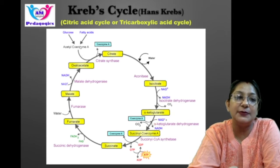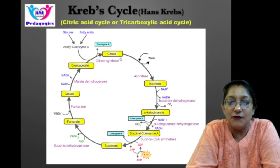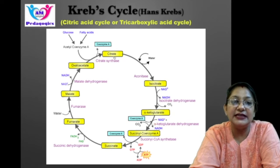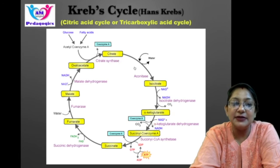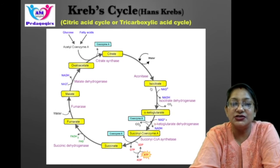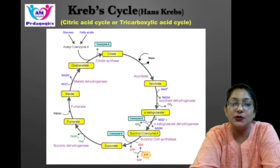Oxaloacetate and acetyl coenzyme A react to form 6-carbon citrate, and coenzyme A is released. This reaction is called citrate synthesis. In the second step, citrate is converted to its isomer isocitrate. The enzyme aconitase catalyzes this reaction.